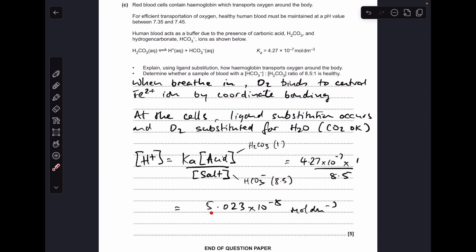So when you put the numbers in, you get an H⁺ concentration for this blood buffer at 5.023 × 10⁻⁸ mol/dm³. So all we need to do now is -log to get the pH, which comes out at 7.30. The lower limit for the blood is 7.35, so this blood is not healthy because 7.30 is lower than 7.35.